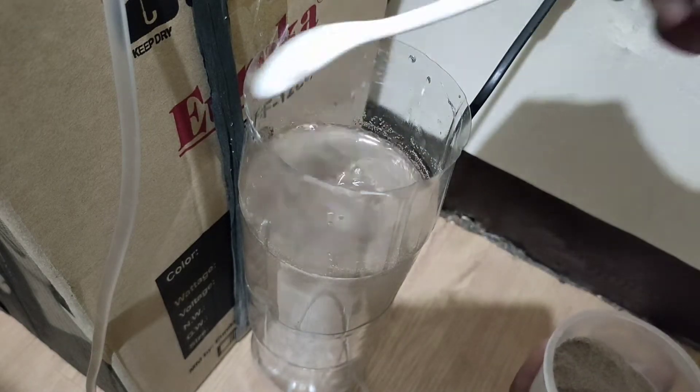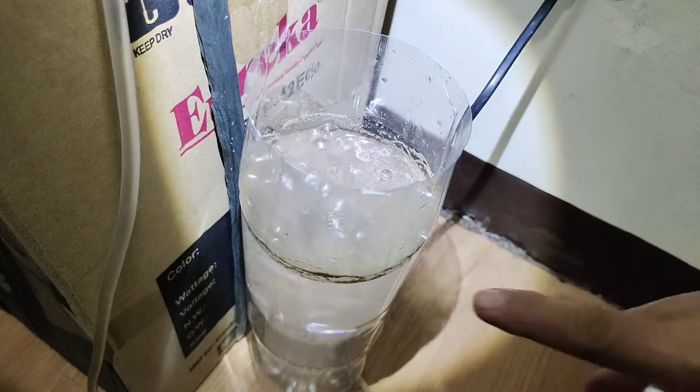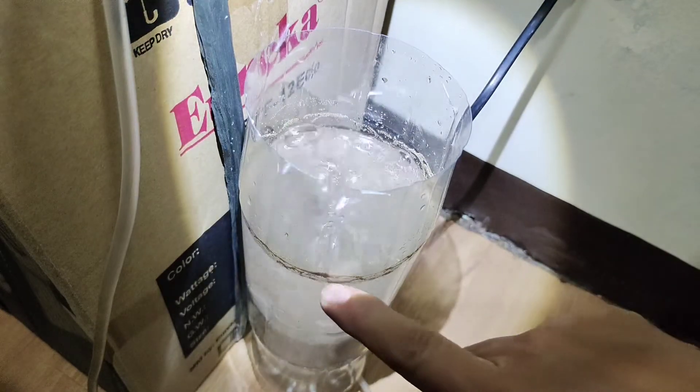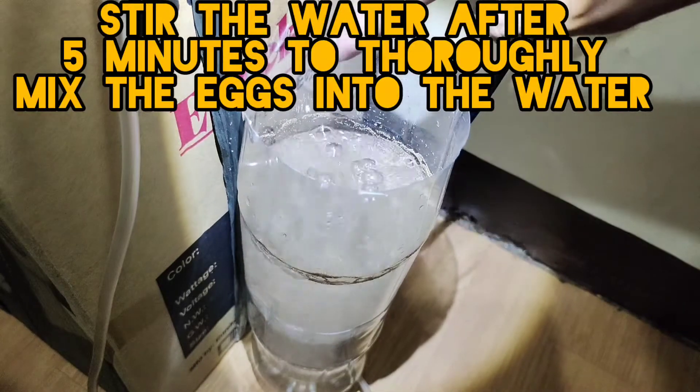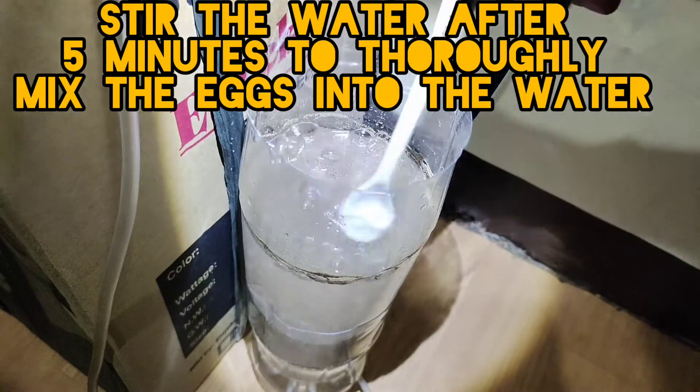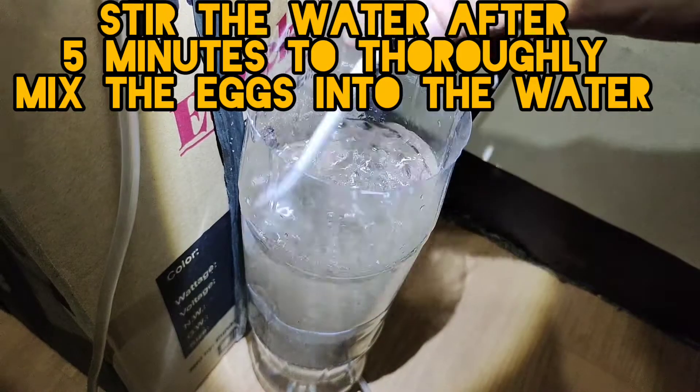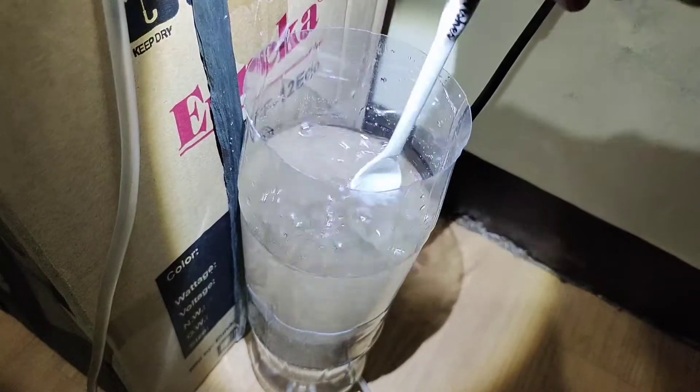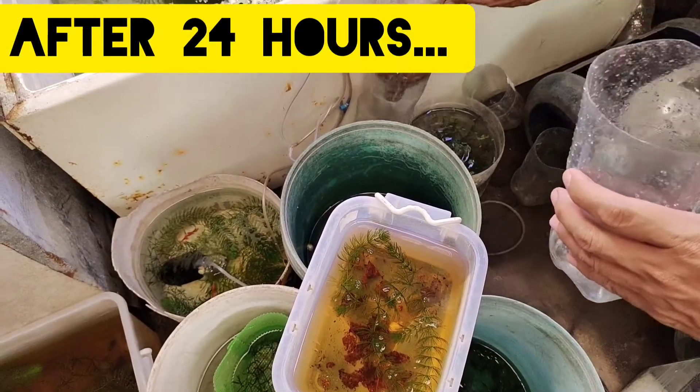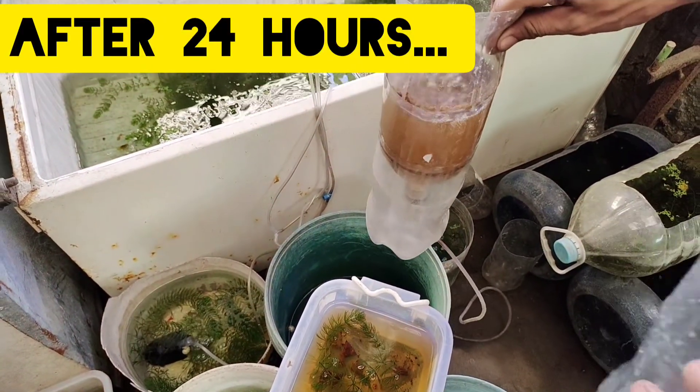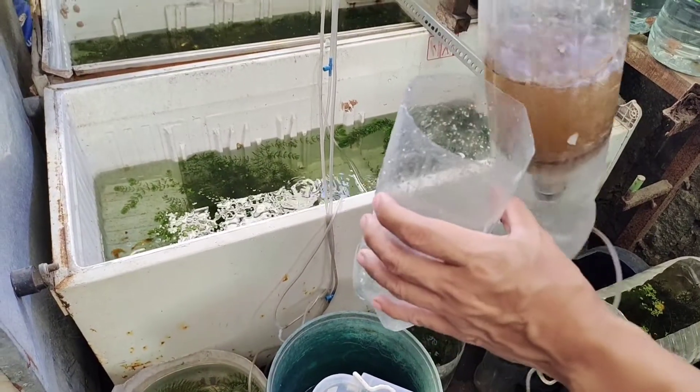So after five minutes, you can see some eggs sticking around the sides. Just stir the water again so the eggs will mix thoroughly into the water. After 24 hours, our baby brine shrimp have hatched already. We'll just transfer it to another container so we can harvest the hatched shrimp easily.